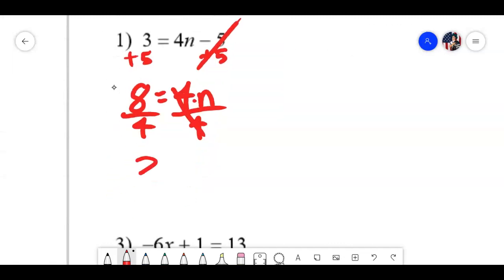Dividing by 4. All right, so 8 divided by 4 is 2. Bring down n. So n equals 2. It's a two-step problem.